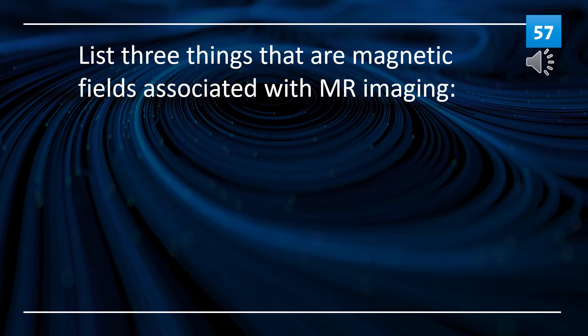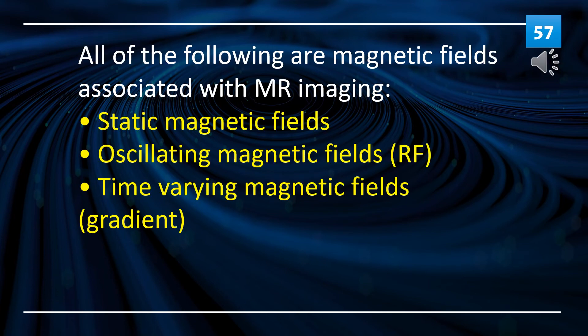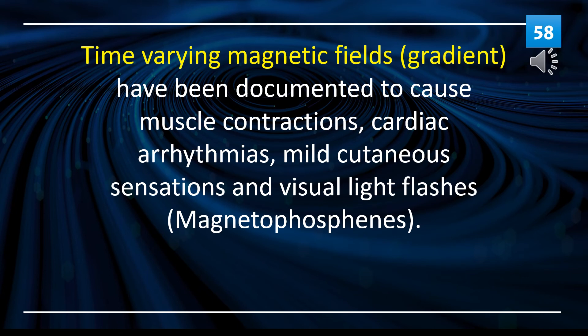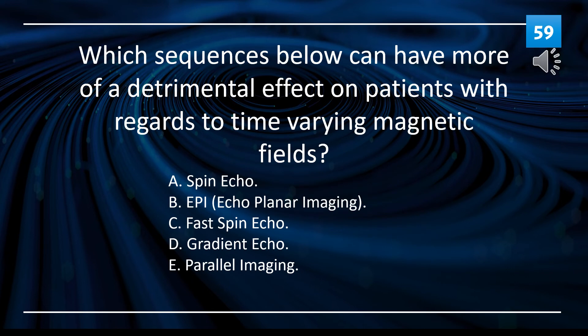List three magnetic fields associated with MR imaging: 1. Static magnetic fields. 2. Oscillating magnetic fields (RF). 3. Time-varying magnetic fields (gradient). Time-varying magnetic fields have been documented to cause muscle contractions, cardiac arrhythmias, mild cutaneous sensations, and visual light flashes (magnetophosphenes). Of the sequences — spin echo, EPI, fast spin echo, gradient echo, and parallel imaging — EPI (echo planar imaging) can have more of a detrimental effect on patients with regards to time-varying magnetic fields.